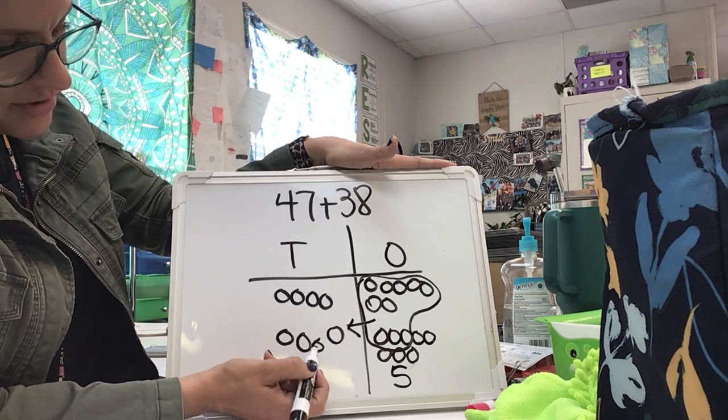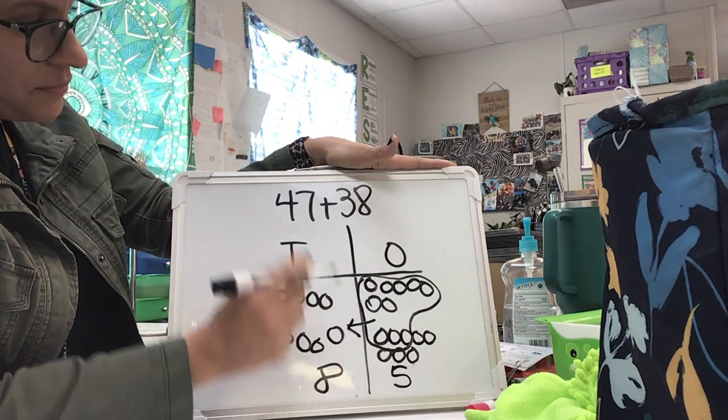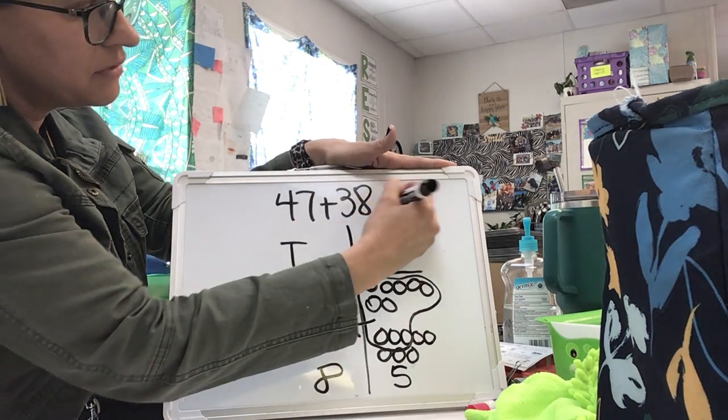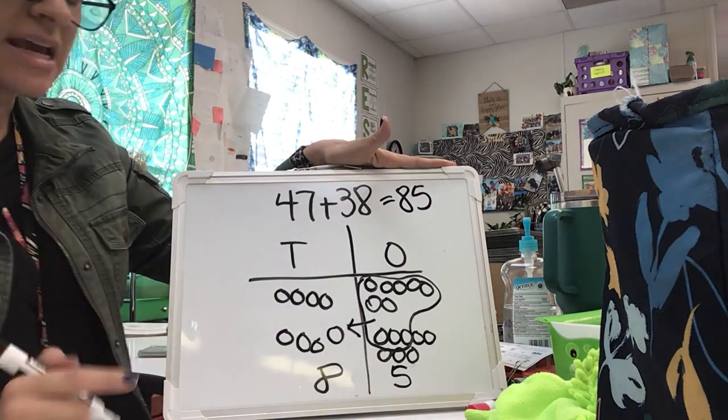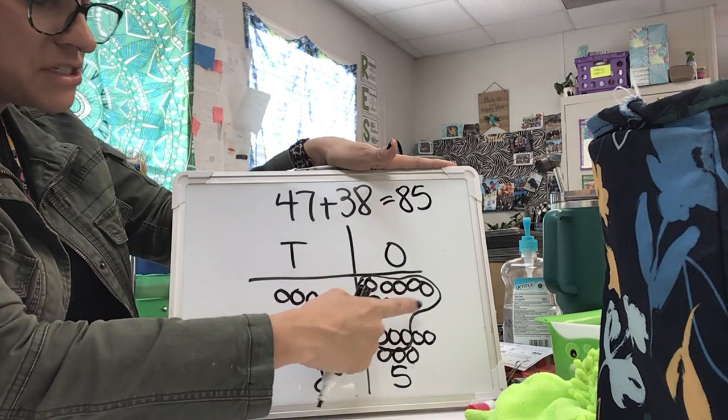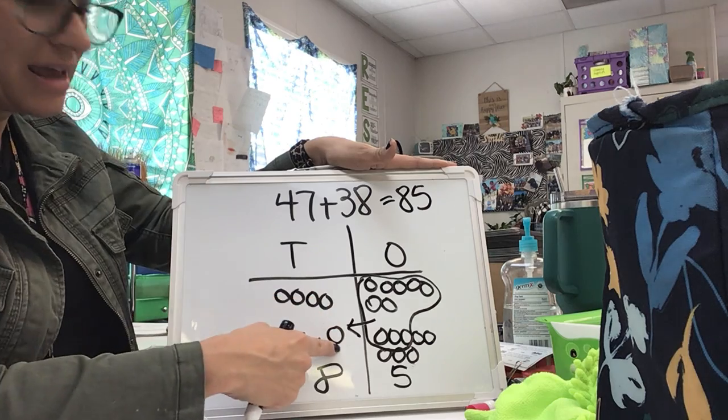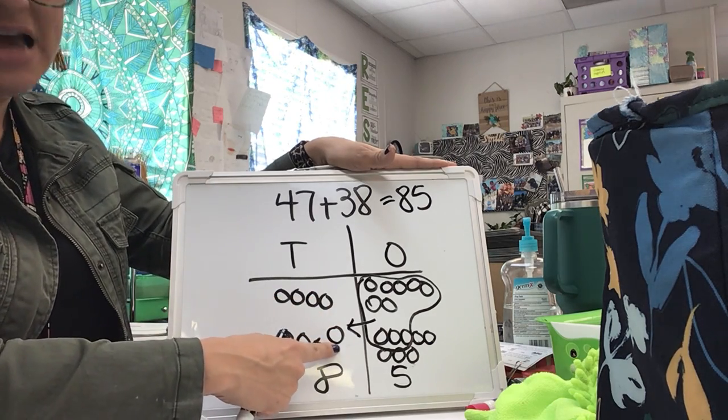And we've got 4, 5, 6, 7, 8 in the tens. So the sum, 47 plus 38 is 85. This is a regrouping problem. I regrouped those 10 ones, and that's how I got this other 10 over here.